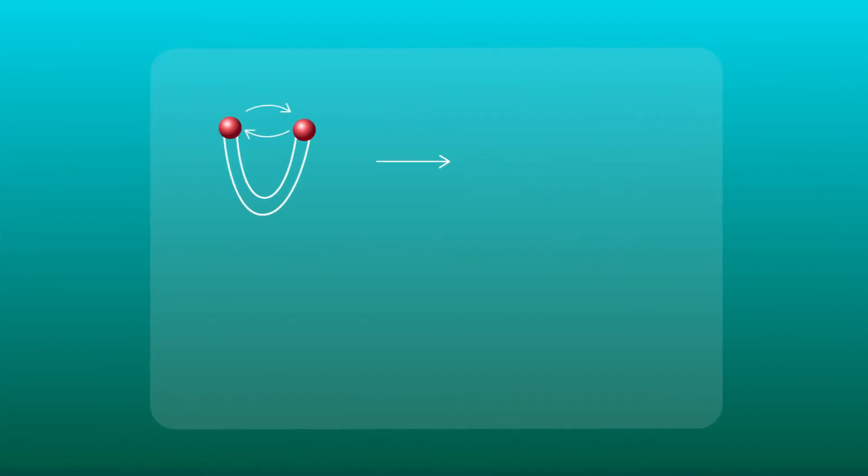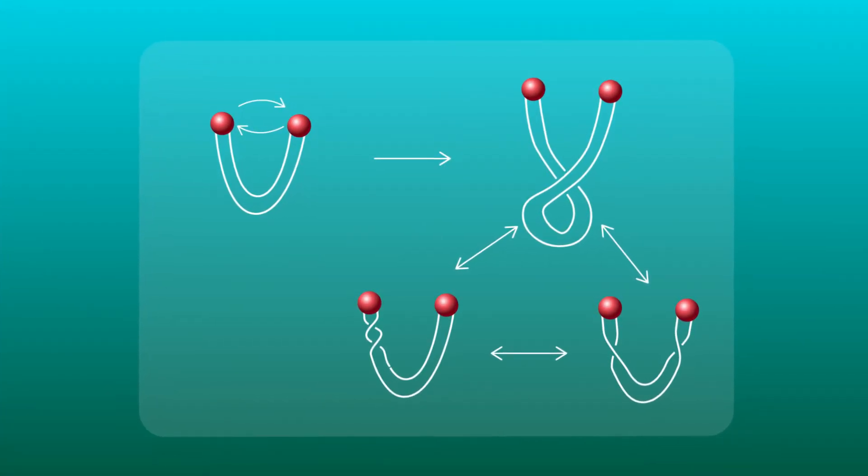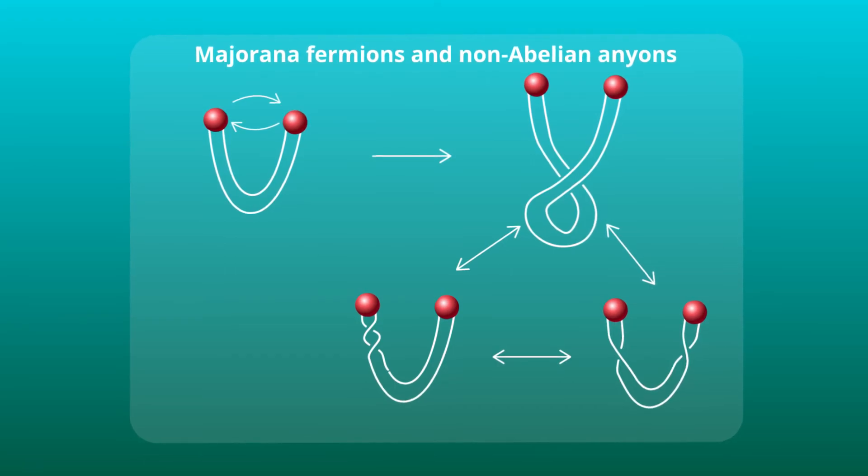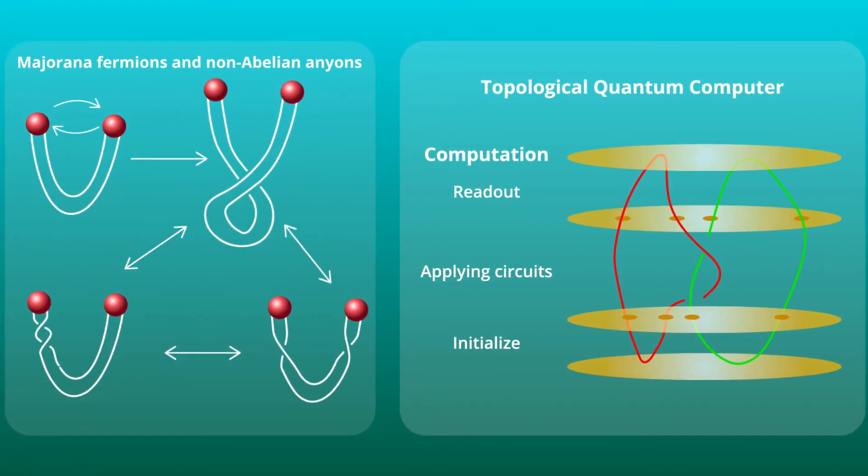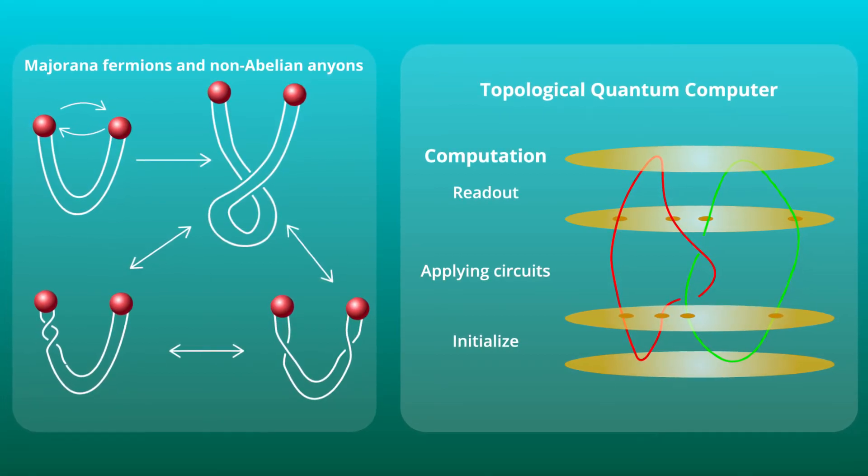Additionally, shot noise could help detect exotic particles like Majorana fermions and non-Abelian anyons that could help us create a fault-tolerant topological quantum computer.